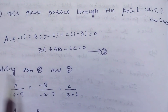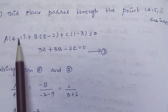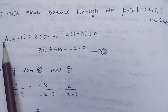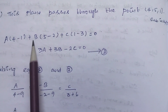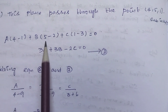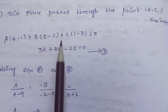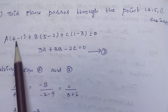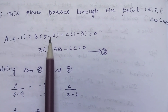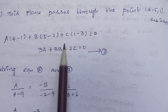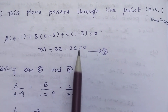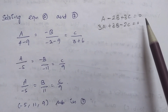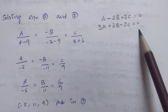Simplifying: 3A + 3B - 2C = 0. Name this equation 3. We now have equation 2 and equation 3 to solve simultaneously.